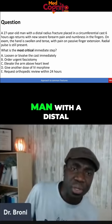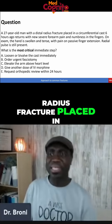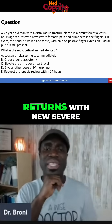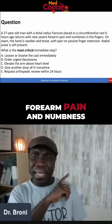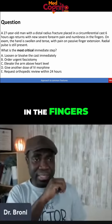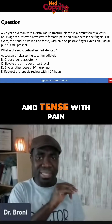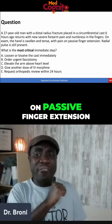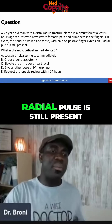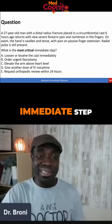You have a 27-year-old man with a distal radius fracture placed in a circumferential cast six hours ago, who returns with new severe forearm pain and numbness in the fingers. On exam, the hand is swollen and tense with pain on passive finger extension. Radial pulse is still present. What's the most critical immediate step?